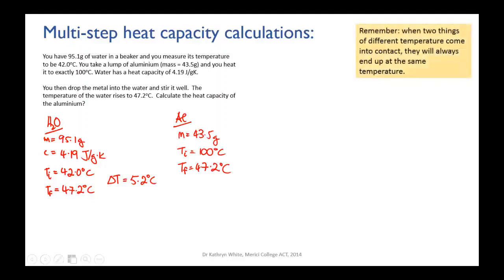Its final temperature is 47.2, and it's worth here perhaps remembering that when two things come in contact and they're at different temperatures, the hot one will cool down and the cold one will warm up until they're both at exactly the same temperature. So when you put the hot metal into the cool water, the hot metal cools down, the cool water warms up, and they both end up being at 47.2 degrees Celsius.